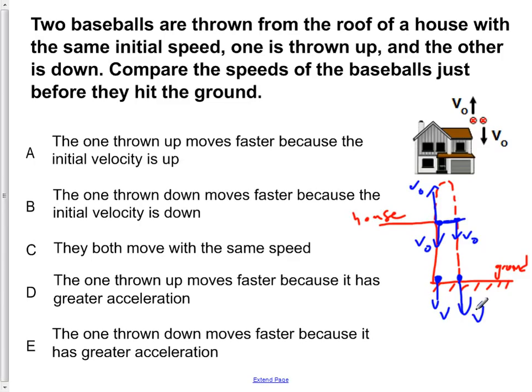They'll both have a speed v because v² = v₀² + 2aΔx. For both of them, a is the same. Δx is the same height that they're going to fall.